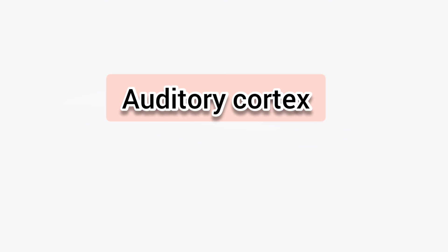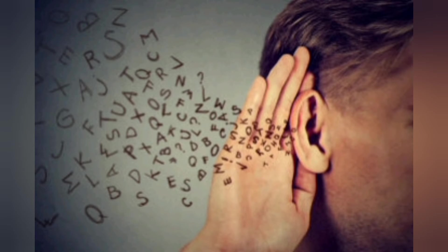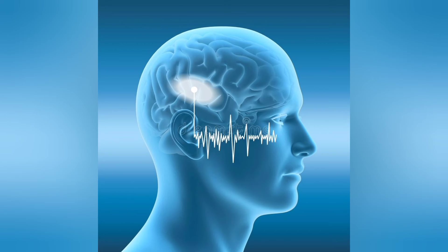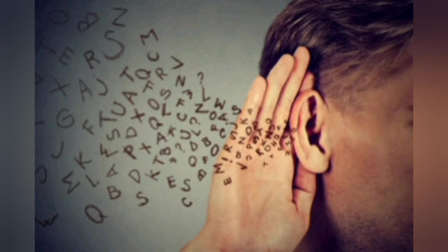The next part is the auditory cortex. This part of the brain is used to sense hearing. Nerve signals from the ears come to the auditory cortex, which helps us to recognize sound. By this process only we can hear sound.